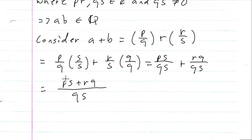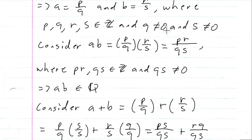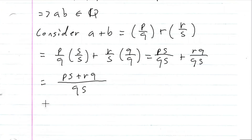Since we have a common denominator, we can combine the numerator, so this will be PS plus RQ, all over QS. Now look at this: we have an integer times an integer plus an integer times an integer, so the whole top would be an integer, and the bottom would be an integer as well. And since Q is not equal to zero and S is not equal to zero, QS is not equal to zero.